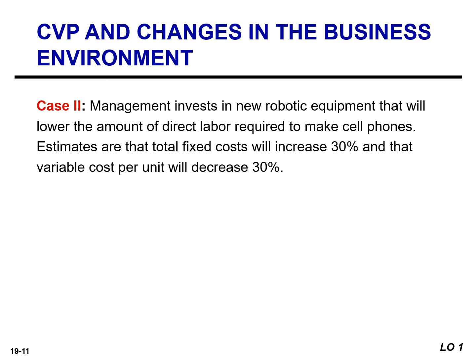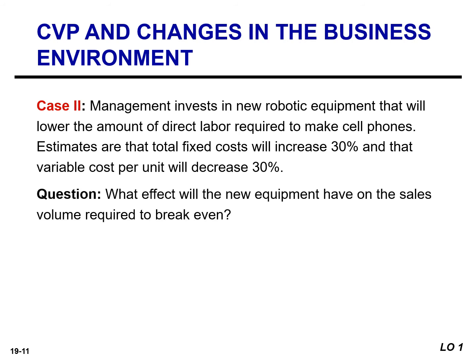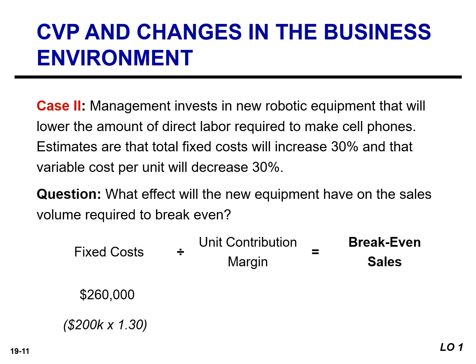In our next scenario, management is investing in new robotic equipment that will lower the amount of direct labor required to make the cell phones. They estimate that total fixed cost will increase by 30%, but the variable cost per unit will decrease by 30%. Total fixed costs increase to $260,000. The variable cost per unit becomes $210, which means the unit contribution margin is $290. The new break-even point is approximately 897 units — a reduction of approximately 10%, or about 100 units — so these changes appear to be advantageous.